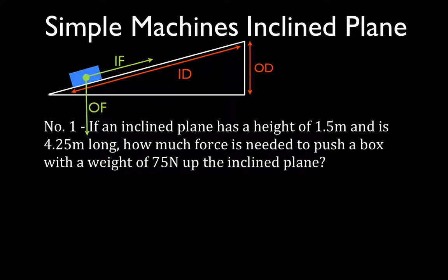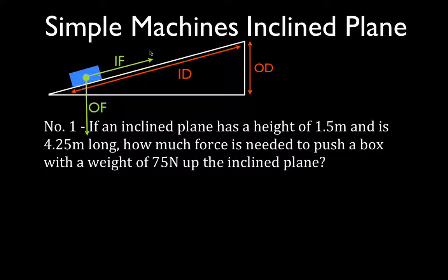Here's our incline plane — it's this white triangle, it's a ramp. Here's the object we want to get up the ramp, it's this blue rectangle. Problem number one says: if an incline plane has a height of 1.5 meters and is 4.25 meters long, how much force do we need to apply to push a box with a weight of 75 newtons up the incline plane? We want to know the input force.